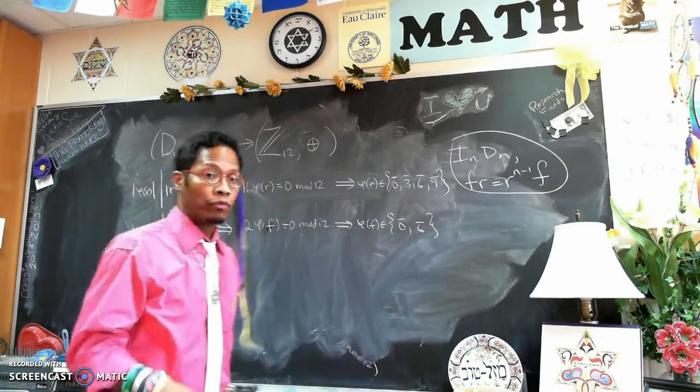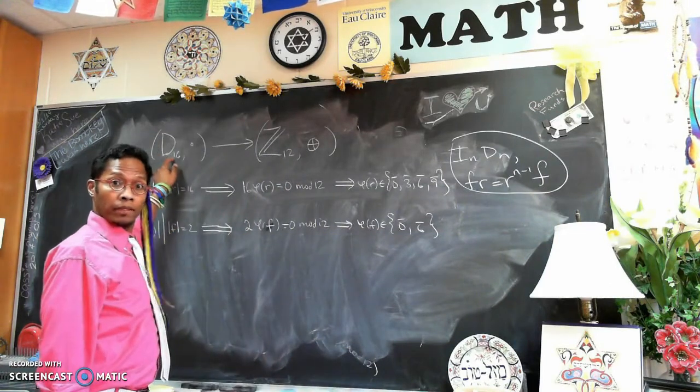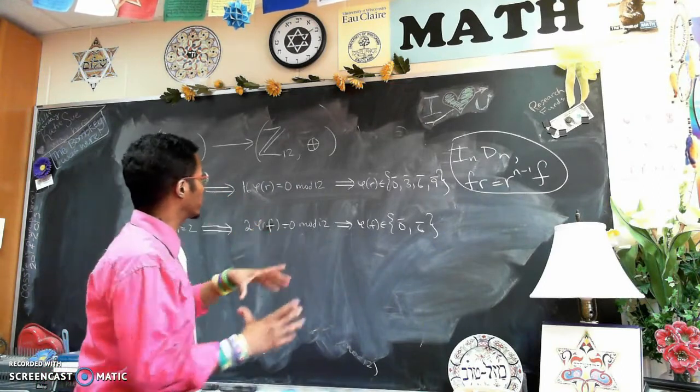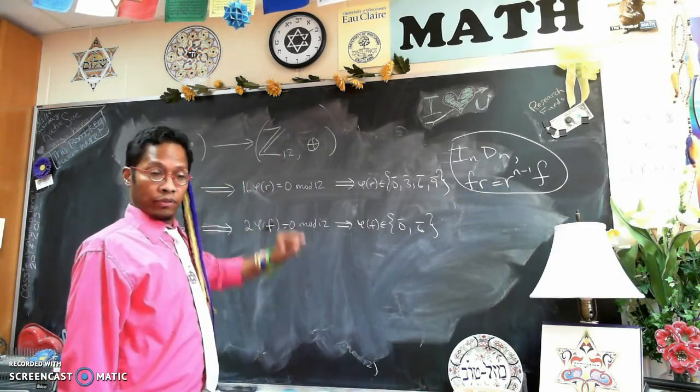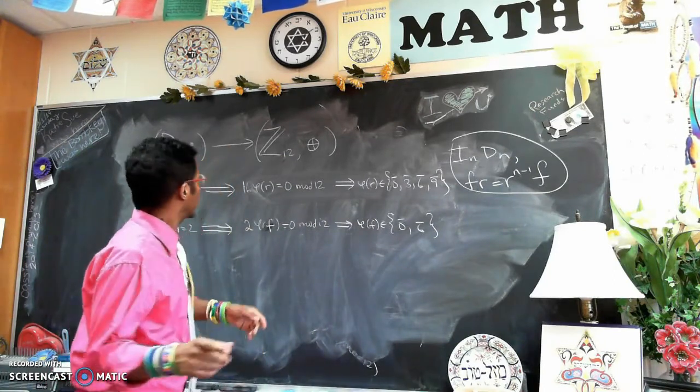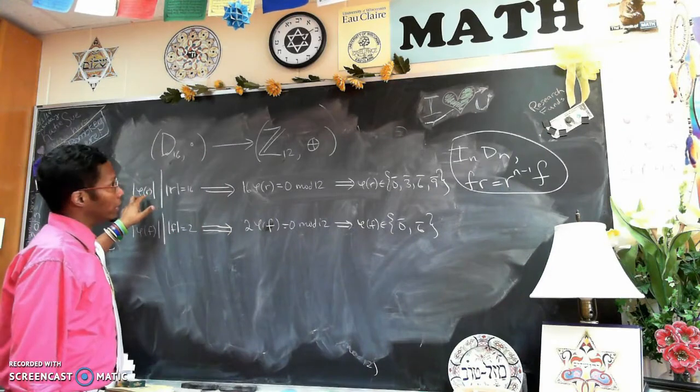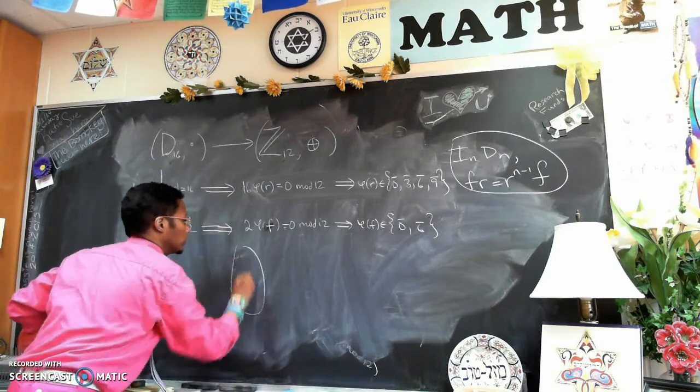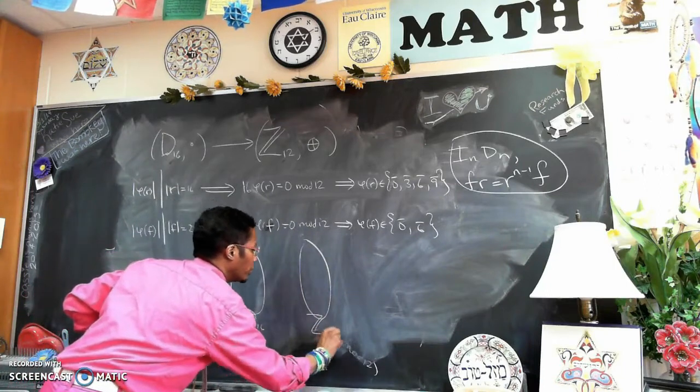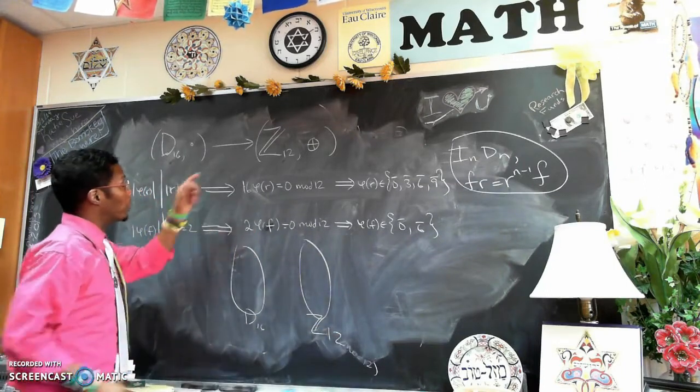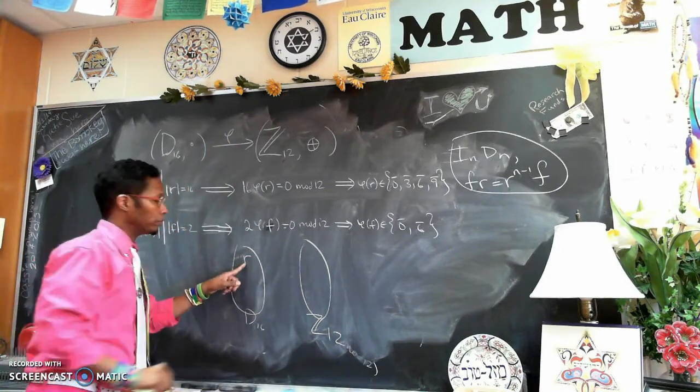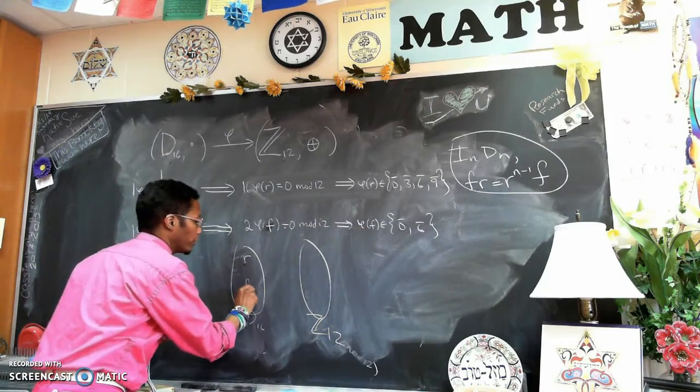In the last one, we were looking at D16, dihedral group for regular 16-gon, into Z12, group of integers modulo 12. We know that in D16 and Z12, the homomorphism φ is completely determined by where it sends the generator, the reflection R, and where it sends the generator of flips F.